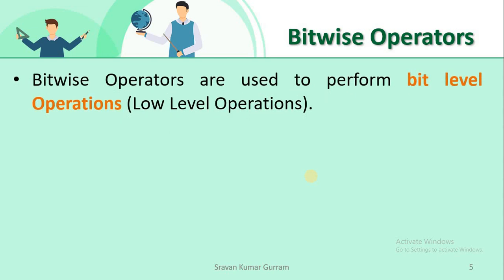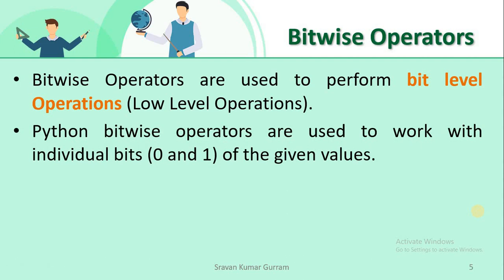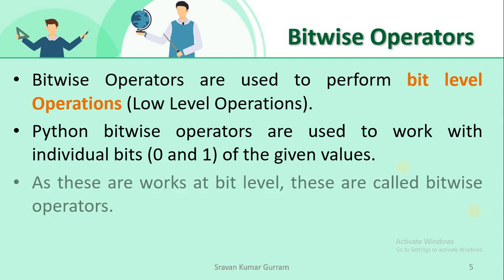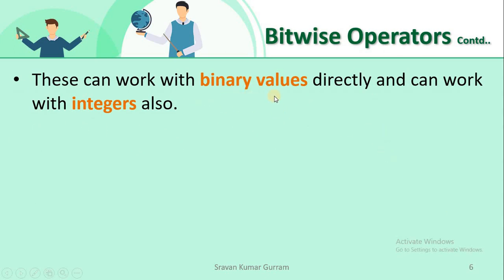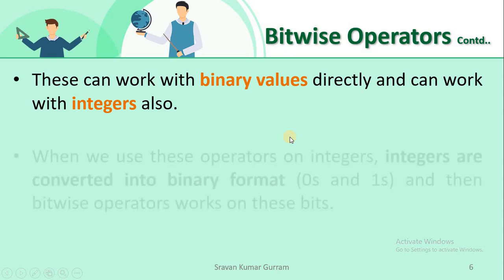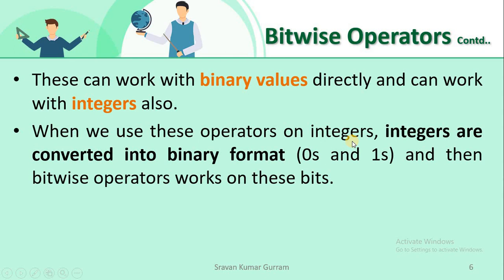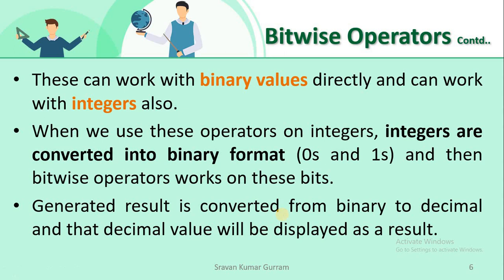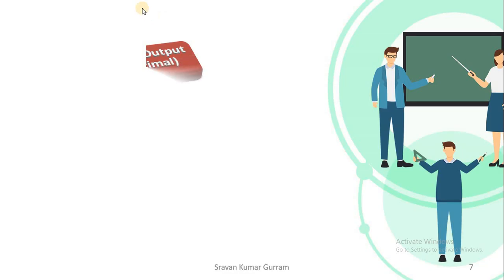Bitwise operators are used to perform bit-level operations, also called low-level operations. They work with individual bits, 0 and 1, of a given value. Since they work at the bit level, they are called bitwise operators. Bitwise operators can work with binary values directly, and also work with integer values. When used on integers, the integers are converted into binary format internally, and then bitwise operators work on those bits. The result is generated in binary format.